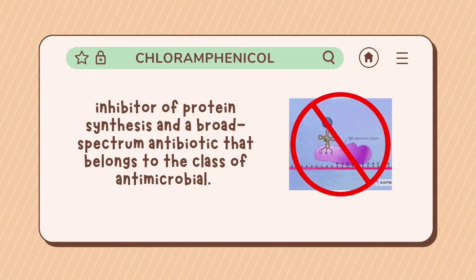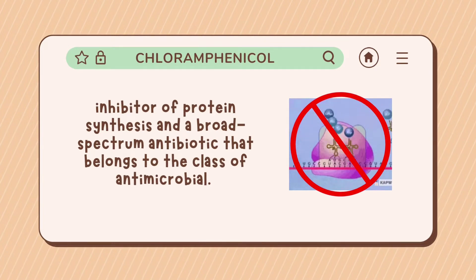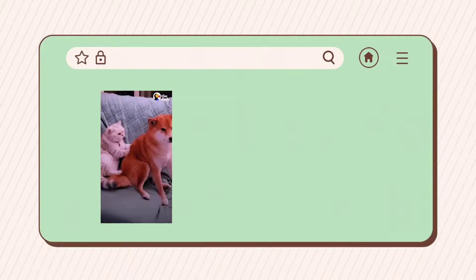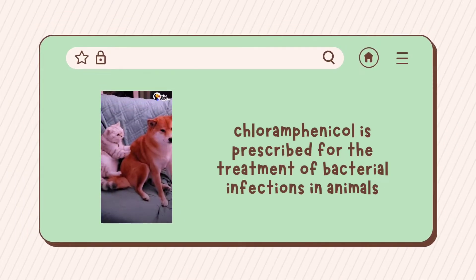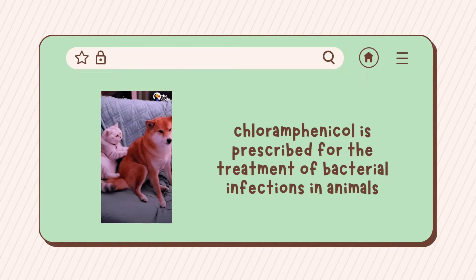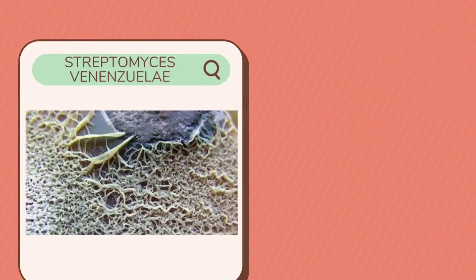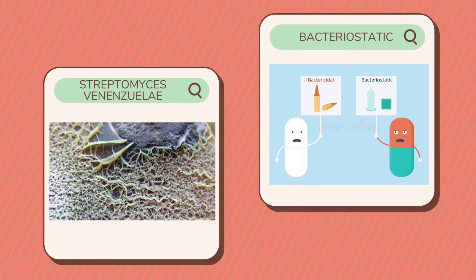What is chloramphenicol? Chloramphenicol is an inhibitor of protein synthesis and a broad spectrum antibiotic that belongs to the class of antimicrobials. In the field of veterinary medicine, chloramphenicol is prescribed for the treatment of bacterial infections in animals, most commonly in dogs and cats.